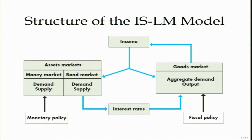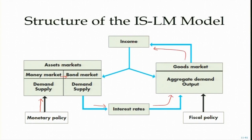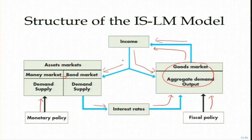This is the larger picture — the structure of the IS-LM model. What we have discussed so far, plugging monetary and fiscal policy into the IS-LM model, these are the two important components of economic policy. Monetary policy affects the money market and bond market, which has implications on the interest rate. This further affects aggregate demand — the goods market — which leads to an increase in income, which in turn has an impact on the goods market as well as the assets market.